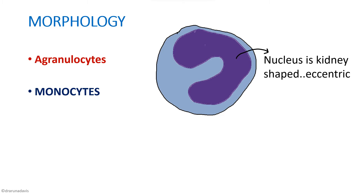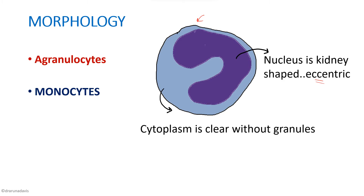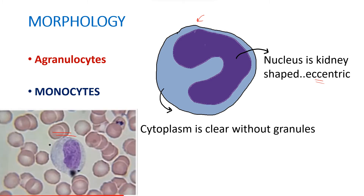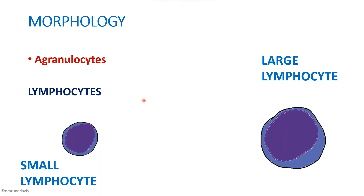The monocyte has a kidney-shaped nucleus which is eccentric — placed to one end of the cell. The cytoplasm is devoid of any granules and is clear. The size is around 14 to 18 micrometers, making it the largest WBC. In the smear it shows a perfect kidney-shaped nucleus with a large, clear cytoplasm containing no granules.